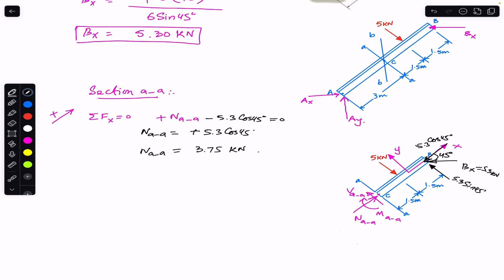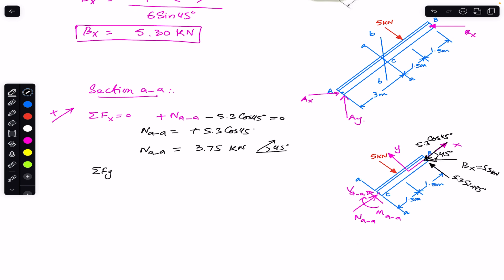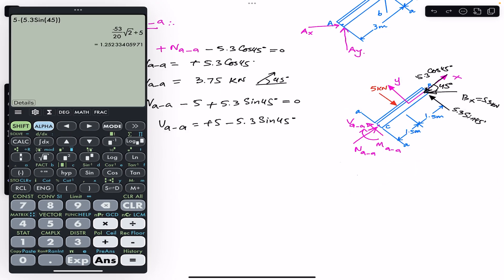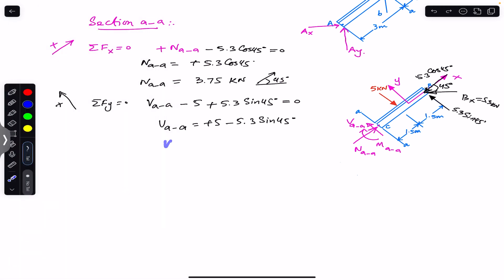Applying sum of forces in y equals zero: VAA is in the positive y direction. The 5 kN force is in the negative y, and the sine component 5.3 sin(45°) is in the positive y. So: VAA − 5 + 5.3 sin(45°) = 0, giving VAA = 5 − 5.3 sin(45°) = 1.25 kN, acting in the positive y direction.